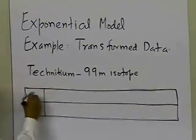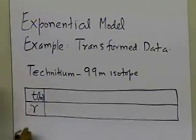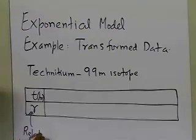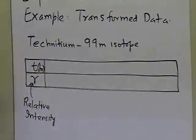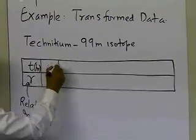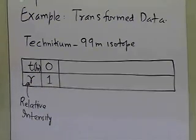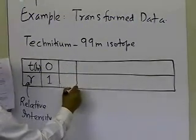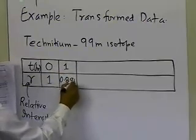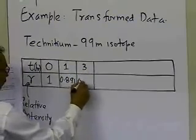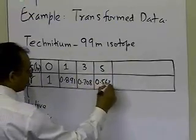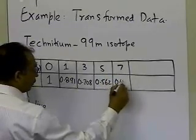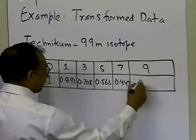I'm going to give you time in hours versus relative intensity data. Relative intensity means this is the intensity of the isotope relative to what is happening at zero hours. At zero the relative intensity is of course 1. At one it is 0.891, at three it is 0.708, at five it is 0.562, at seven it is 0.447, and at nine it is 0.355.